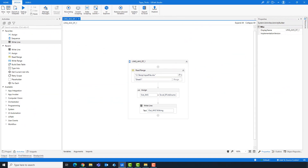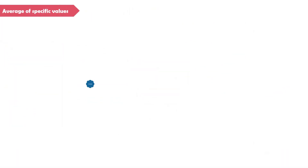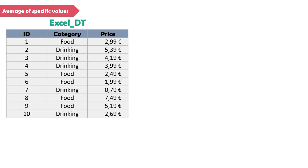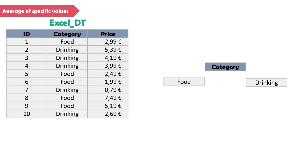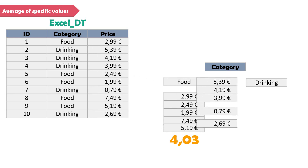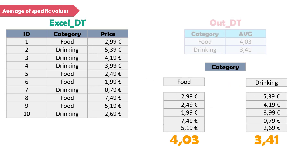Let's now move to the last part of this video. In this part I want to show you how to use the average function with the group function. It means I want to calculate only specific values from a column using criteria from another column. I have the same table again. As you see, the second column contains two different values: food and drinking. First I want to group the rows using the category column. After grouping the values, I want to calculate the average of column price for each category — first the food values, then the drinking values. At the end I want to get a table as output which contains two columns: category and average.